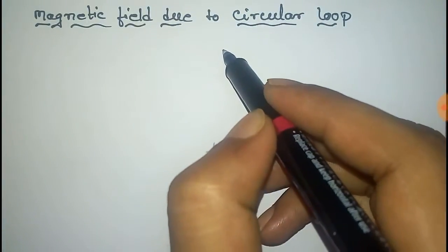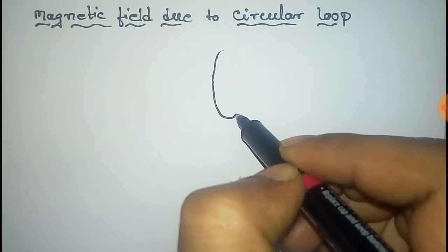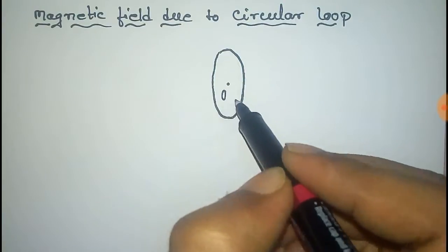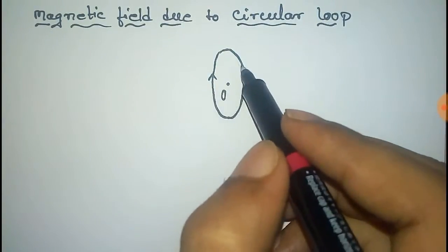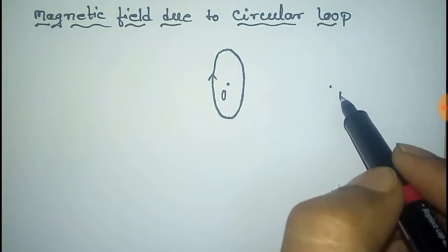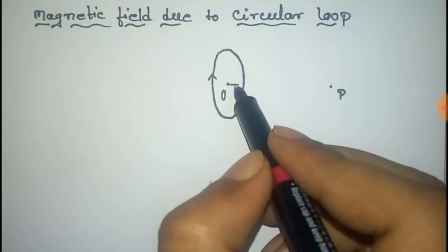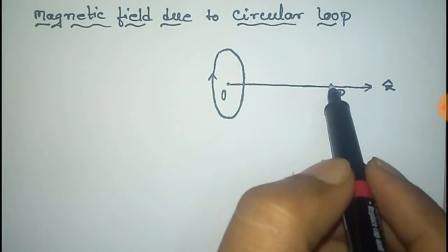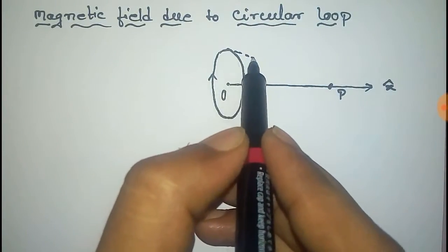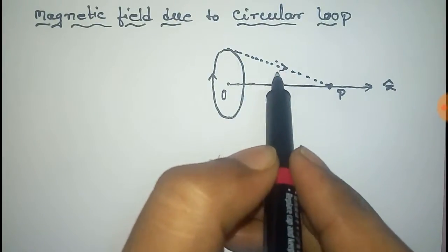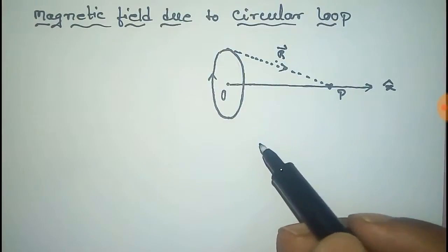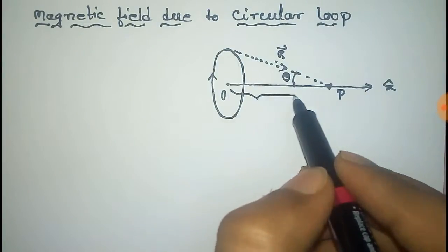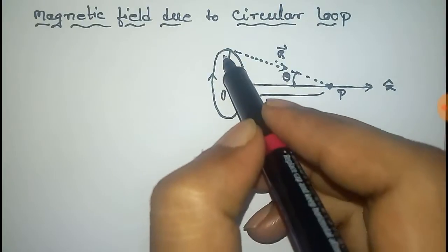We have to find the magnetic field due to a circular loop. This is a circular loop with the center at the origin O, and the current is directed in this direction. For this loop we have to find the magnetic field at point P. We join P with the origin O — this is the direction of x-cap. This line gives the r vector, and the angle between the r vector and OP is theta. The distance from O to P is x, and the radius of the loop is a.